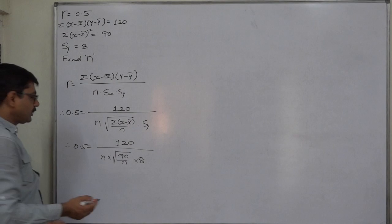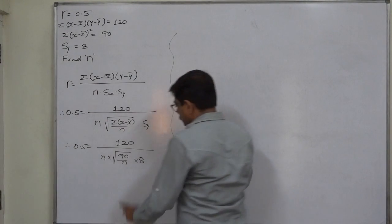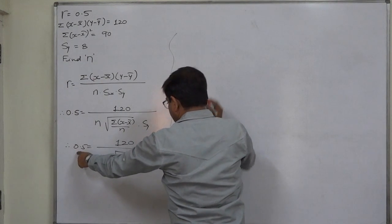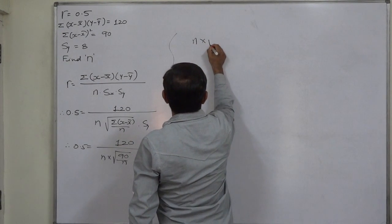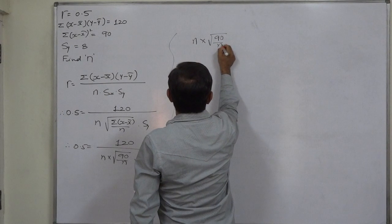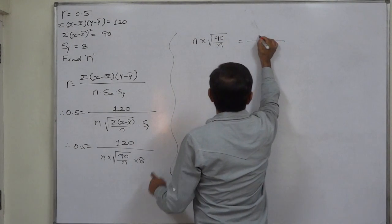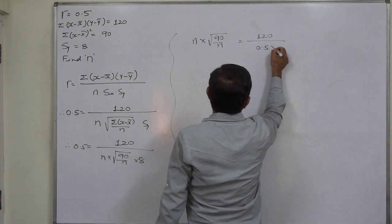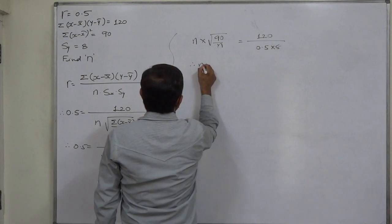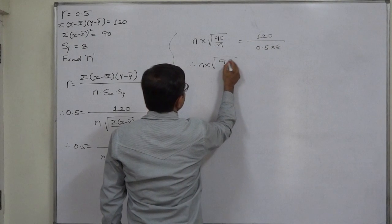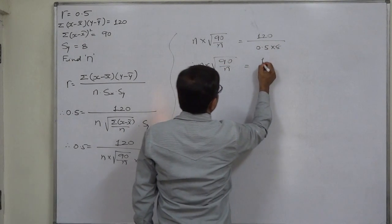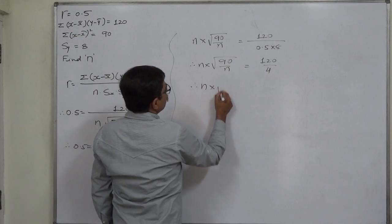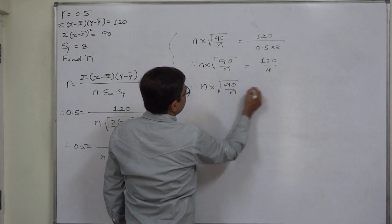Cross multiplication and simplification gives us: n times square root of (90/n) equals 120 divided by (0.5 times 8). That means n times square root of (90/n) equals 120/4. That means n times square root of (90/n) equals 30.